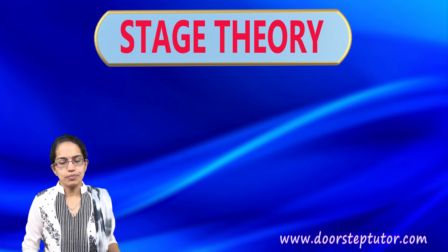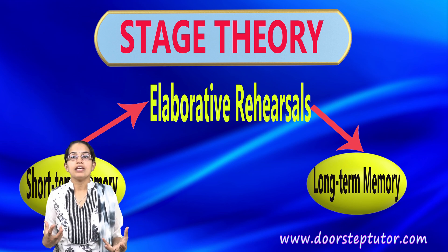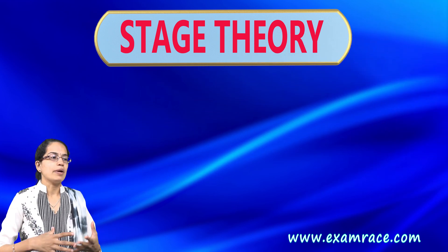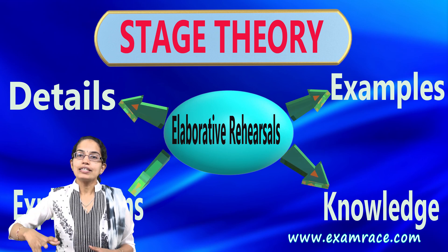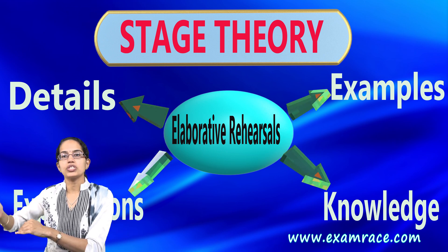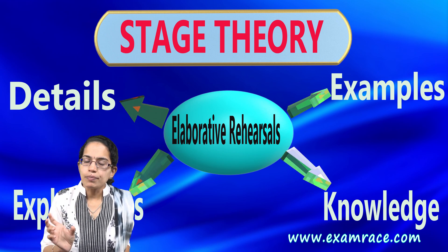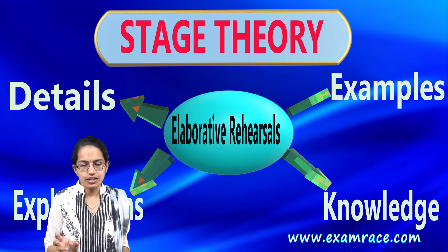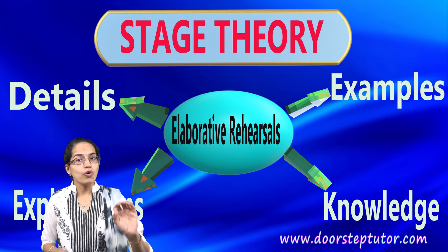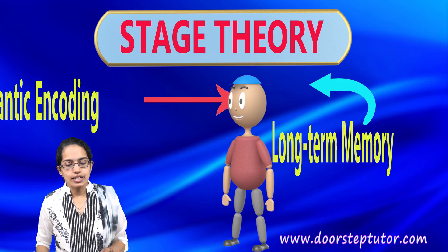If you want to move information into long-term memory, there needs to be elaborative rehearsal. That means understanding the meaning of a word — let's say 'memory' — grasping its concept, understanding models, and trying to relate or build on existing information so that it is semantically encoded. Long-term memory focuses on elaborative rehearsals. Later, experiments proved that under the stage model, short-term memory is encoded acoustically and long-term semantically, but this was later challenged by the levels of processing model.